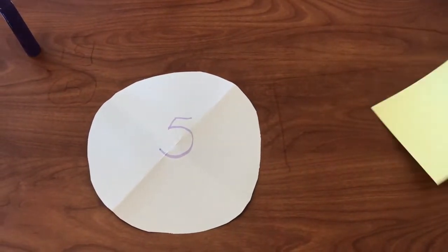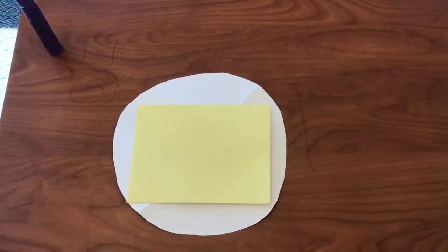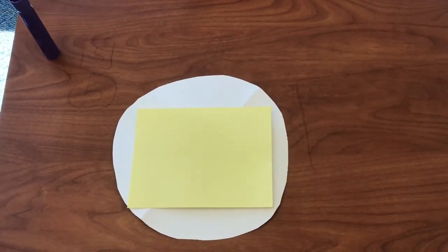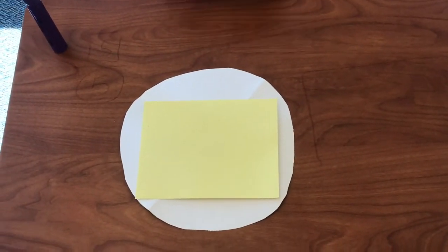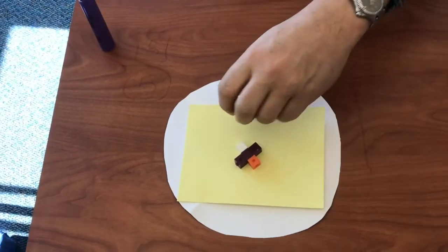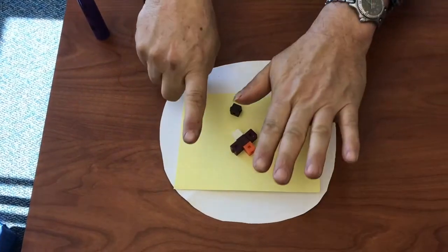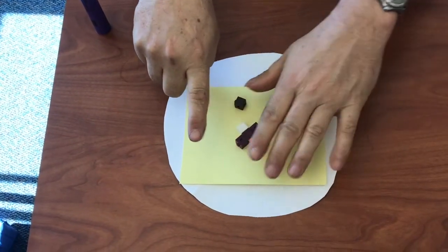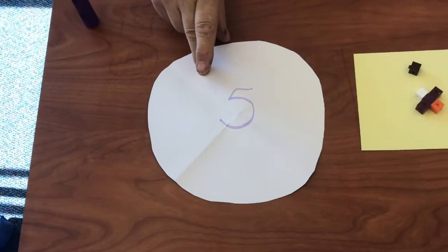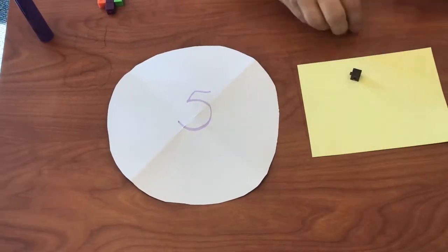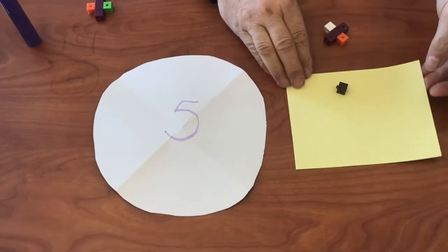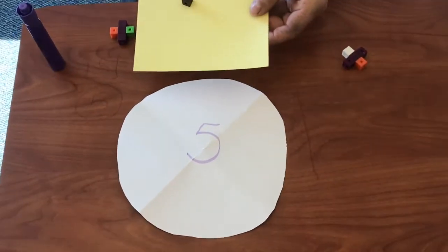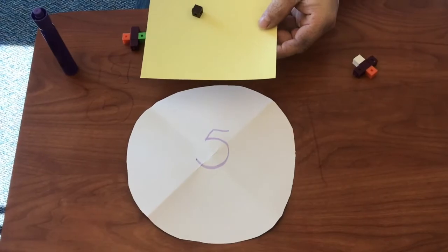Look what happens if I have more. Now I've got six fingers. Can I make a whole thing? Yeah. Look, it turns into a division problem. I can make one whole, and I have one fifth more than that.